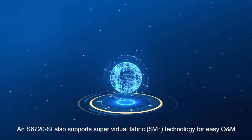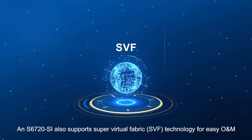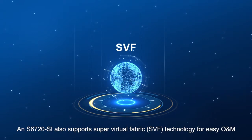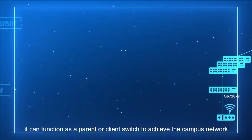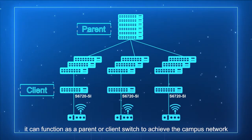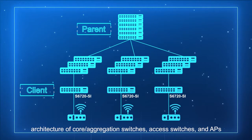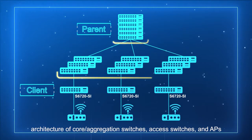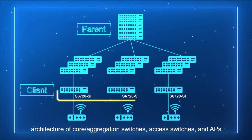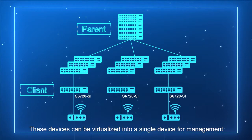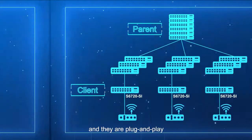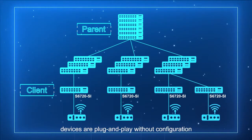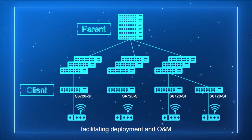The S6720-SI also supports Super Virtual Fabric technology for easy O&M. It can function as a parent or client switch to achieve the campus network architecture of core aggregation switches, access switches, and APs. These devices can be virtualized into a single device for management, and they are plug-and-play without configuration, facilitating deployment and O&M.